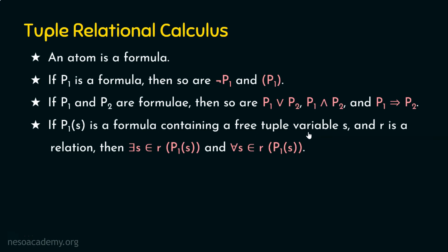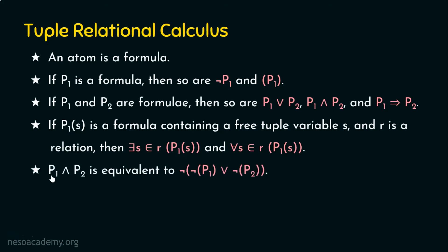If P1(s) is a formula containing a free tuple variable s, and R is a relation, then we can form: 'there exists s belonging to R such that P1(s) is true,' and also 'for all s belonging to R, P1(s) is true.' So both the existential and universal quantifiers can be applied to a free tuple variable within a formula.